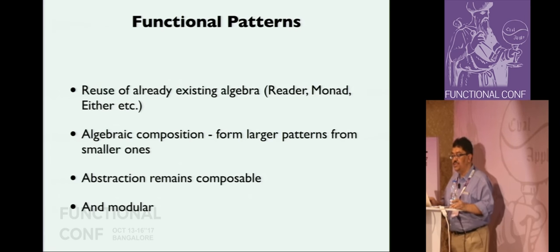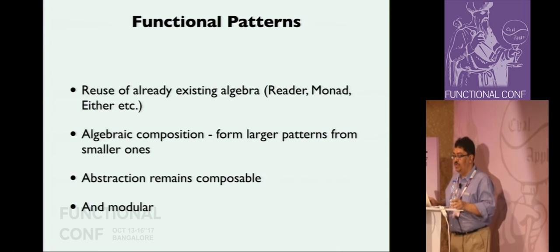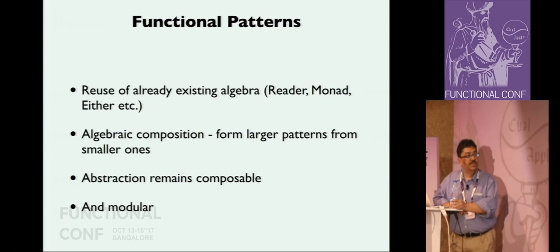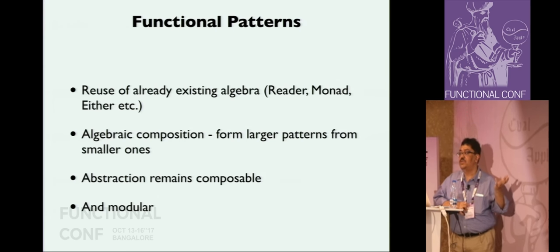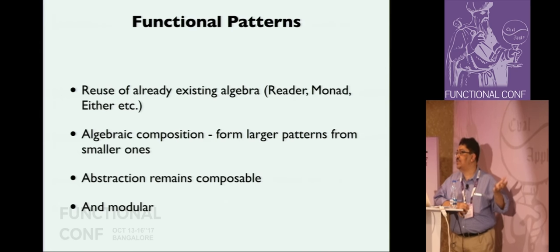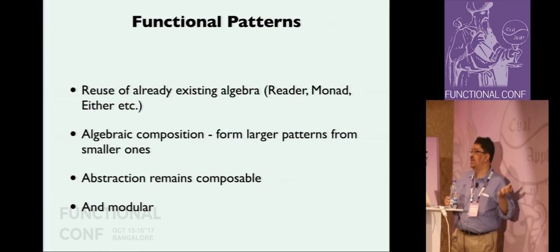Quickly summarizing: functional patterns are made useful by reuse of already existing algebra - we were successfully able to reuse the reader algebra, the monad, Either, etc. Algebraic composition was used to form larger patterns out of smaller ones - map reduce was an example where we composed multiple patterns. The abstractions remain composable and modular. By looking into some aspects of an existing code base, it is very likely that you will discover many such patterns and raise your program to a different level of abstraction. But before doing any refactoring with abstraction, be aware of the cost - as was mentioned in the keynote, there are costs to everything, so be sure you can justify the cost you are incurring.